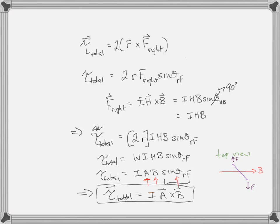That is the torque on a current loop — it took a lot to get there. We'll do a little more with that and then move on to calculating magnetic fields.